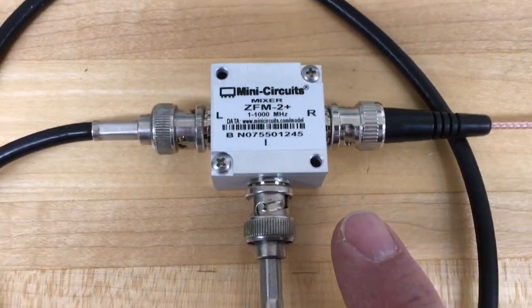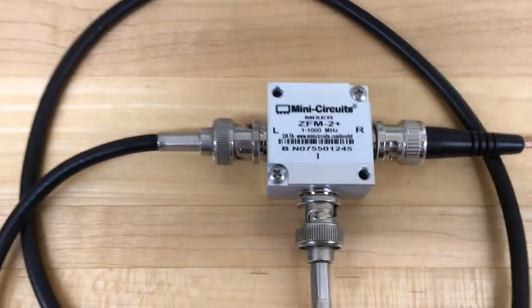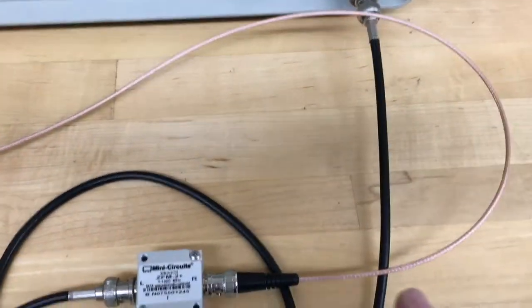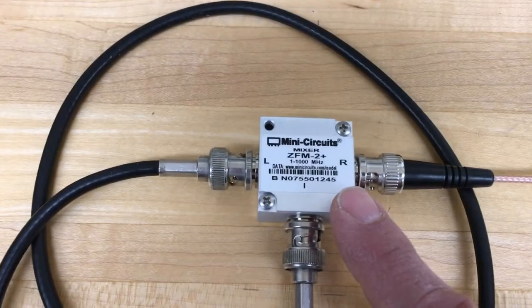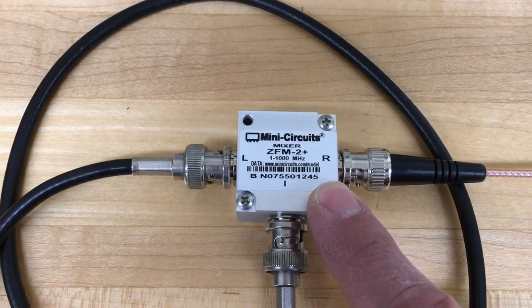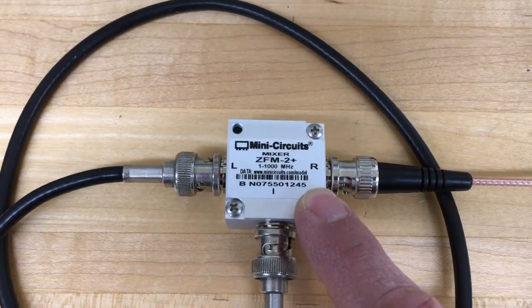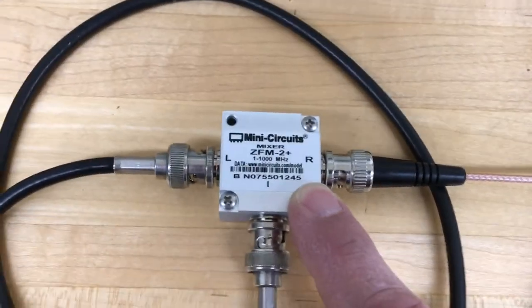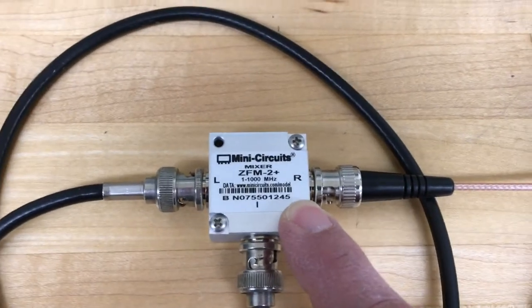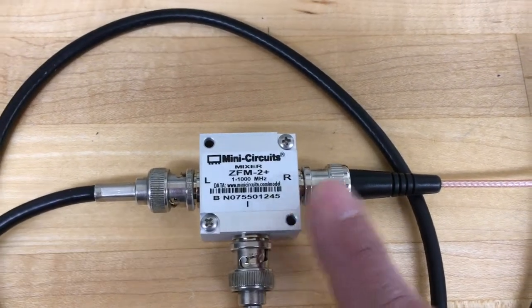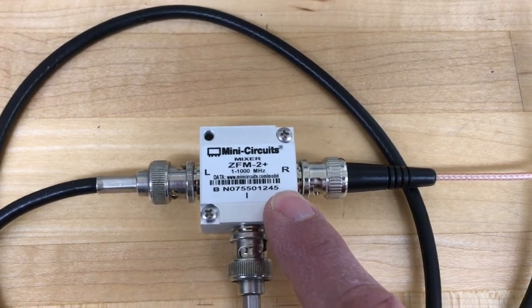The mixer takes the output of our amplifier, and that goes into what's called the RF input of the mixer, because our signal is kind of its radio frequency. It's hundreds of megahertz, which is a radio frequency. So it goes into the RF input of the mixer.